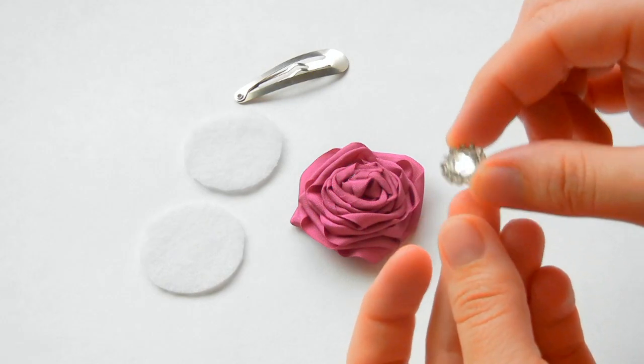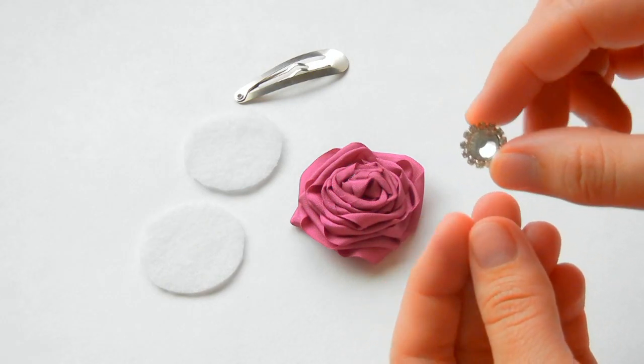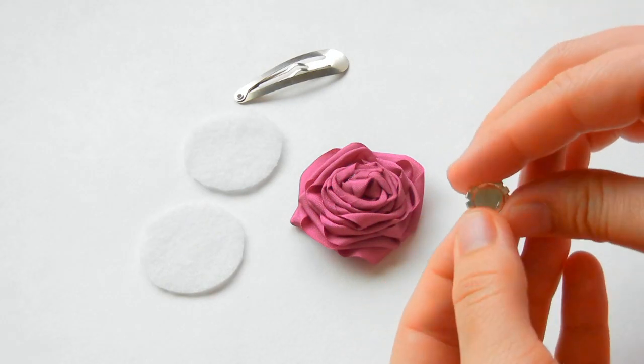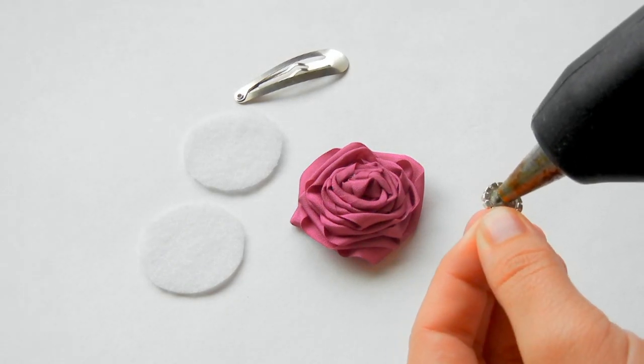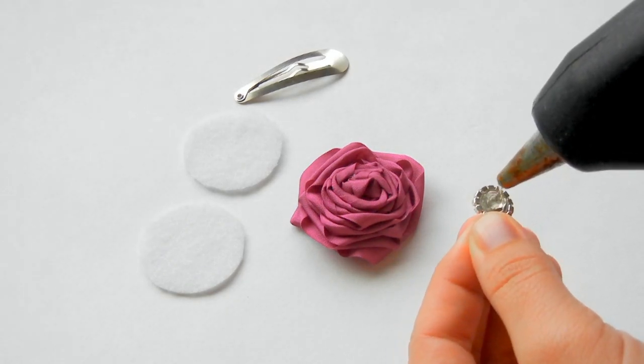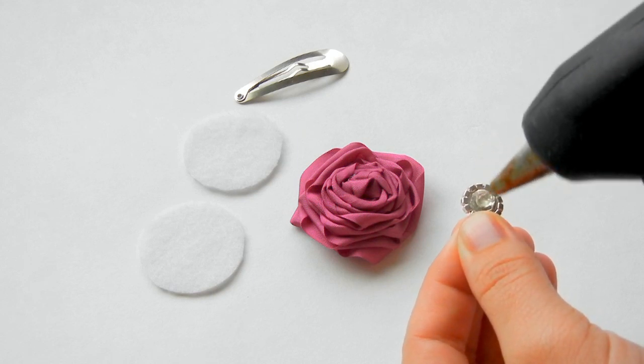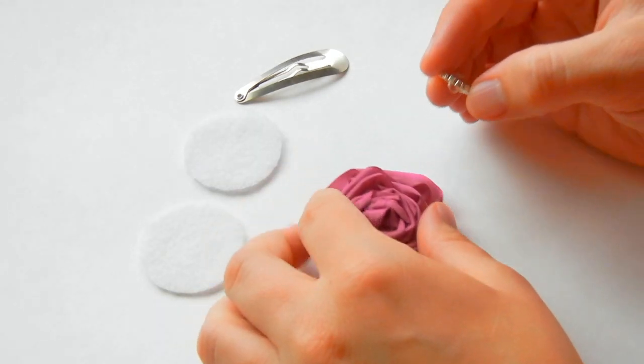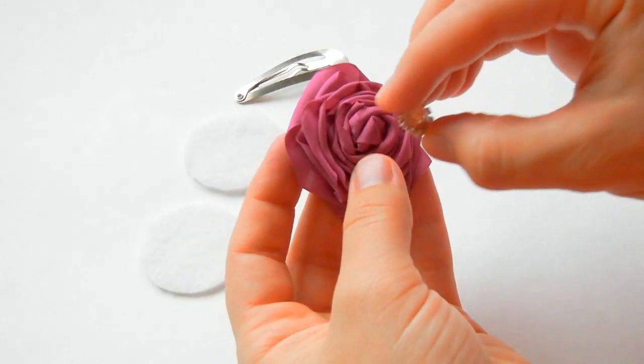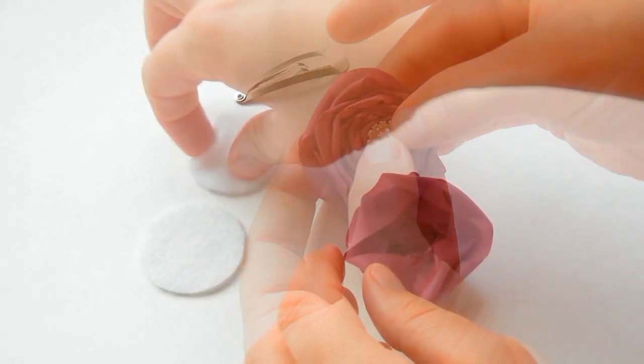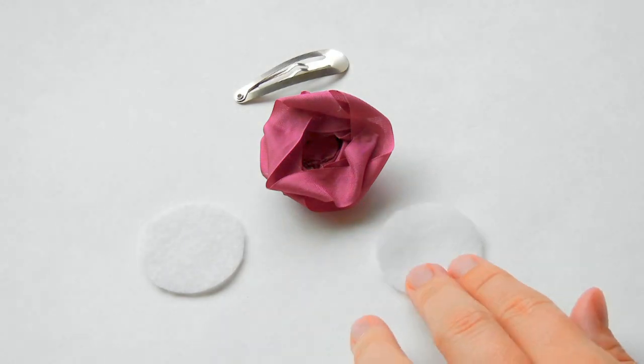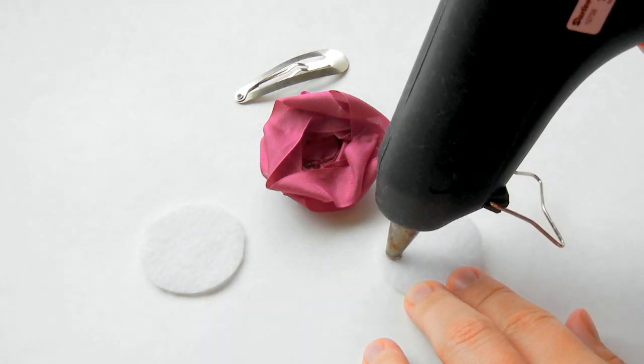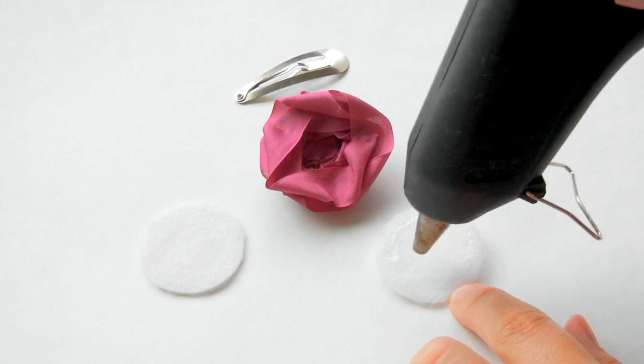We have these beautiful gems at TheRibbonRetreat.com. We have a huge selection. They're so fun to dress up bows or flowers or other crafts. I'm just going to add a dab of glue and then put it in the center. Now I'm going to add my flower to a felt circle, just putting hot glue around the edge.